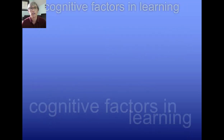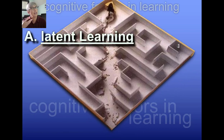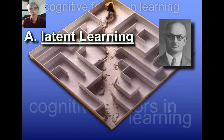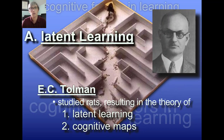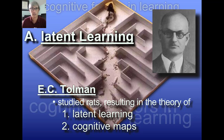Latent learning - to be latent means it lies dormant, like when a caterpillar goes into its cocoon. This is learning that's in our brain that we can tap into just by effortfully processing. The man behind latent learning is E.C. Tolman, and he studied rats, resulting in theories of latent learning and cognitive maps.